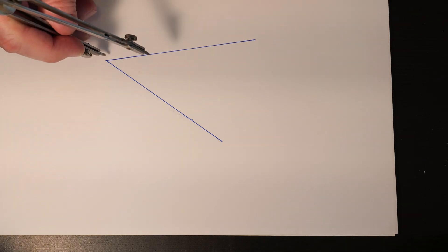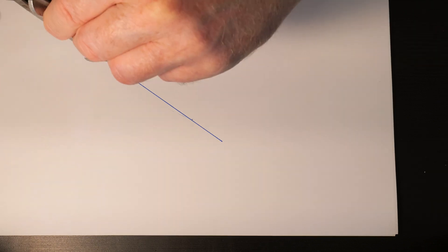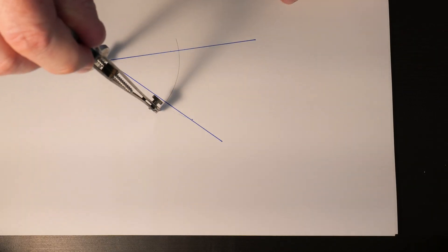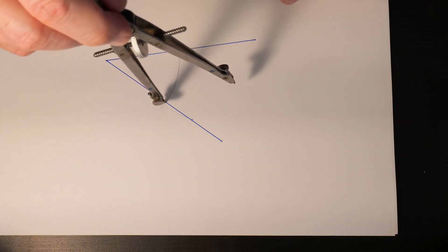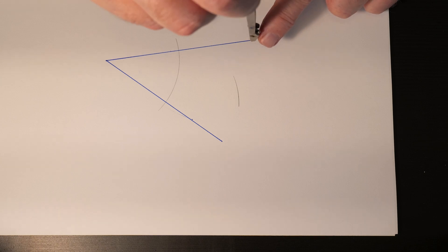You're going to set it at some arbitrary distance and put the point on the vertex of that angle and draw an arc all the way across both lines. And then use those intersecting points to draw another arc outside.